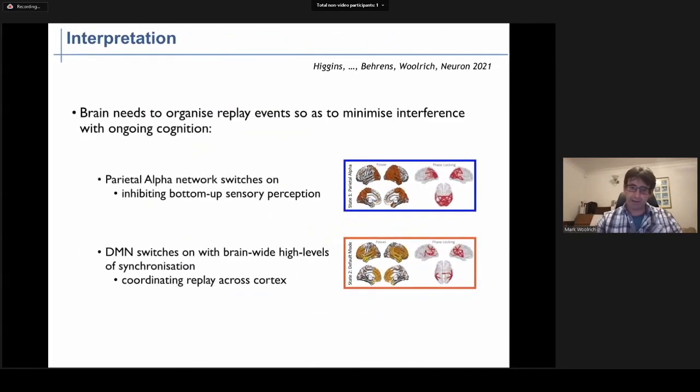So what do we think is happening here? We think that perhaps what the brain is doing is it needs to be able to allow replay to occur uncontaminated by ongoing cognition and processing of incoming stimuli. So the parietal alpha network could well be switching on to inhibit bottom-up sensory processing of incoming visual stimuli, for example. And then at the same time, the default mode network is going to need to coordinate the actual replay, and it does so using these brain-wide high levels of synchronization.